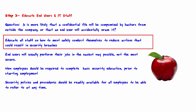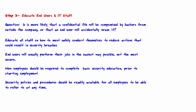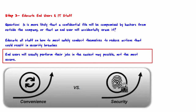No matter how good the technology used to secure the network, actions on the part of both end users and IT staff can result in security breaches. The way to reduce these problems is to educate all staff. Specifically, they should be educated on the acceptable use policy, the security policy itself, and any procedures applicable to their specific job. End users will usually perform their jobs in the easiest way possible, not the most secure, and are often not aware that certain actions may pose security threats.